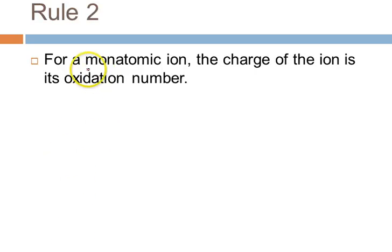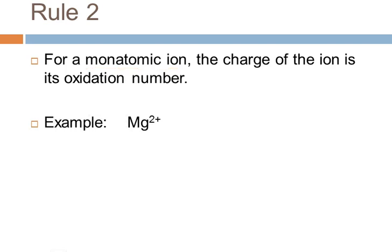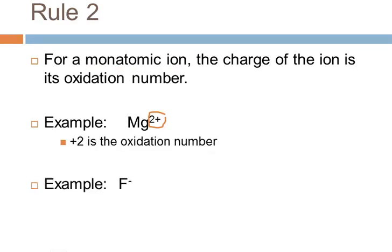Rule number two says for a monatomic ion — an ion that is made up of only one atom — the charge of the ion is its oxidation number. For example, the magnesium ion has a charge of plus two, and that's its oxidation number as well. The fluoride ion has a charge of minus one, and that's its oxidation number as well. So if it's a monatomic ion and you can unambiguously predict its charge from its location on the periodic table, that will be its oxidation number.